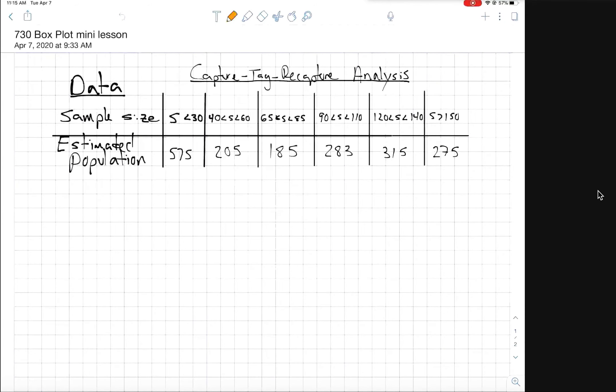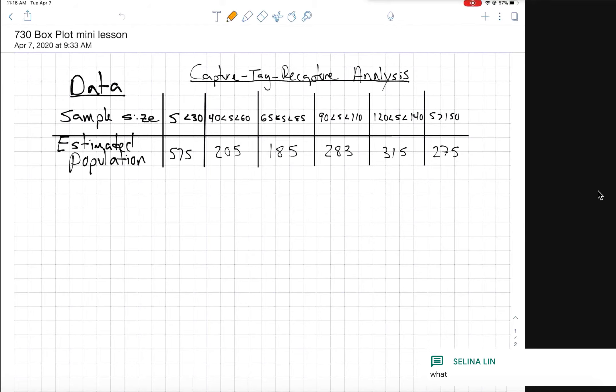Here's data from one student who did the estimated fish population activity. You can see the different estimations based on the sample size. First we have a sample size that's less than 30 fish, then our second sample they caught between 40 and 60 fish, then between 65 and 85 fish, then between 90 and 110, and so forth. You can see how the estimations are changing based on the number of fish they caught in their small tank. Now if you didn't do the activity last week this information will be a little bit confusing, but at least we can practice building a box plot.